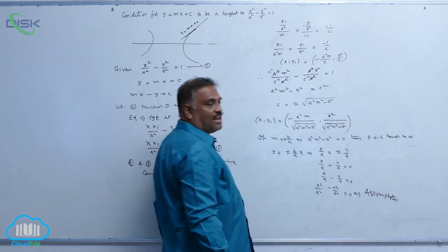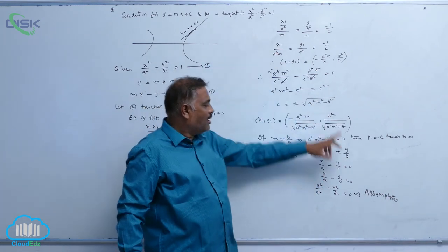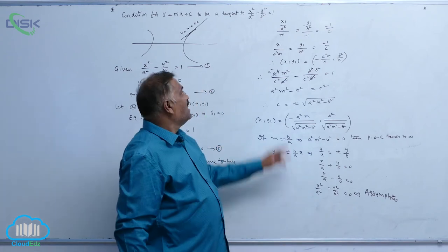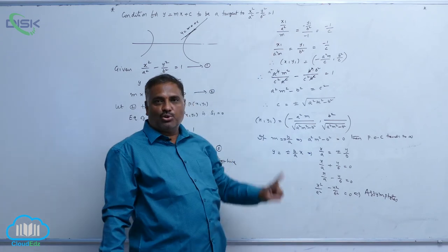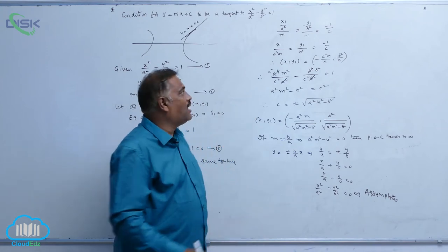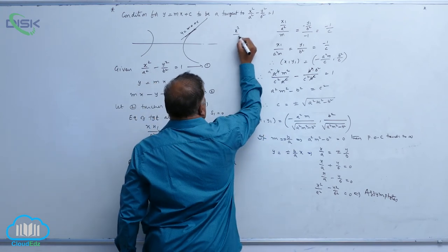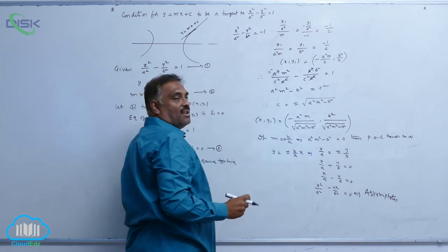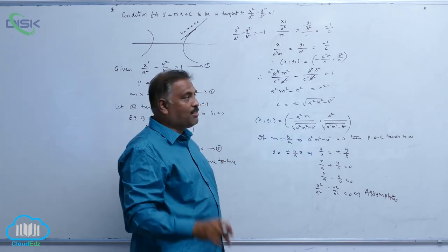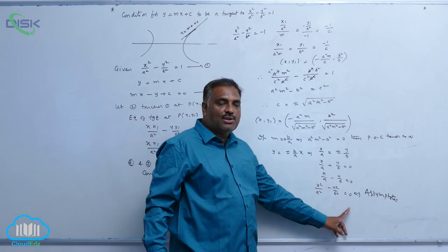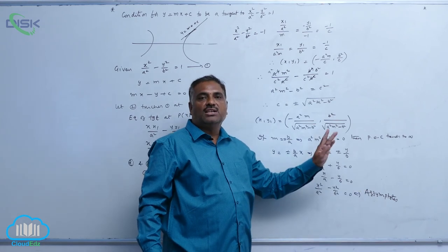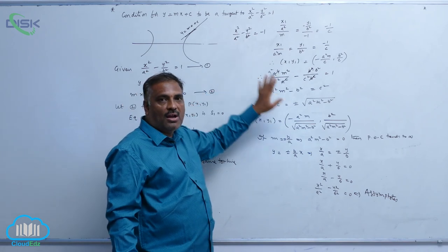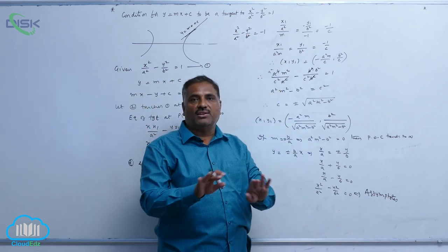We observe one important logic: the hyperbola and the asymptotes differ by a constant. If you write x²/a² - y²/b² = 1, it is the hyperbola. If you write x²/a² - y²/b² = -1, it is the conjugate hyperbola. And if you write x²/a² - y²/b² = 0, it gives the asymptotes. So hyperbola, conjugate hyperbola, and asymptotes differ only by a constant.